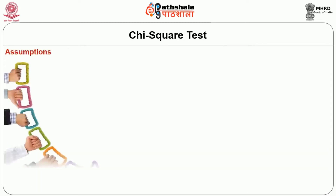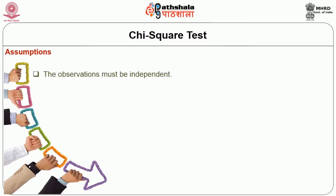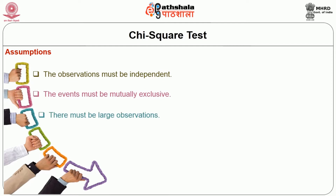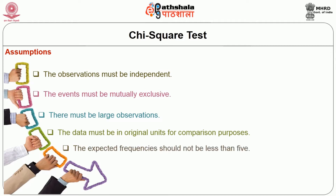Assumptions of the chi-square distribution: First, the observations must be independent. Second, the events must be mutually exclusive. Third, there must be large observations. Fourth, the data must be in original units for comparison purposes. Fifth, the expected frequencies should not be less than 5; if less than 5, it should be pooled with the frequency from the adjacent item. Sixth, the sample data must be drawn on a random basis.